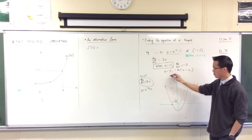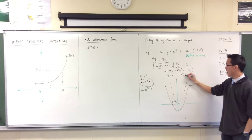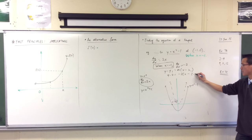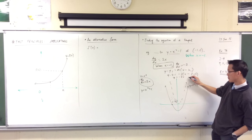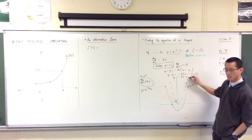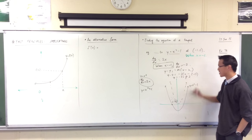y minus 0, m is negative 2, x minus negative 1. y equals minus 2x minus 2. Is that okay?